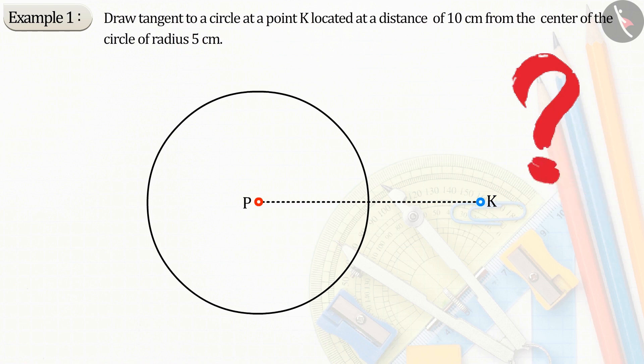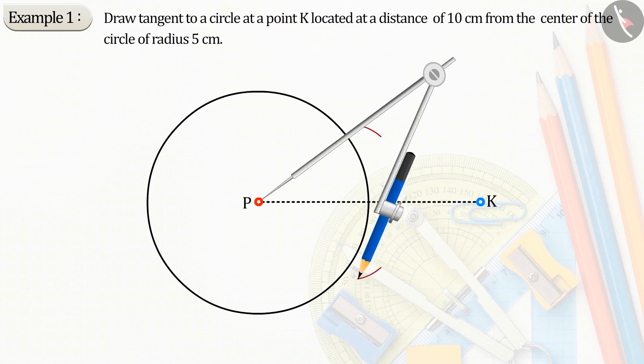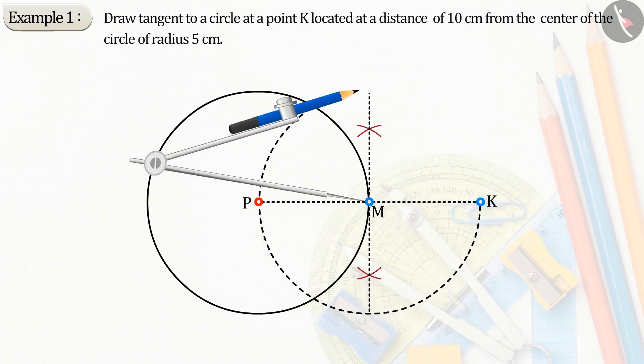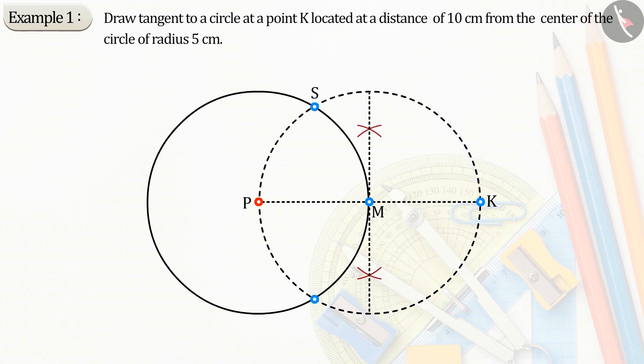Can you tell what step should we take next? Now we will bisect the line segment PK from which we get the midpoint M of the line segment PK. Now let PM or MK be the radius. Let's draw a circle from the point M.